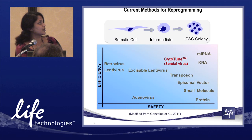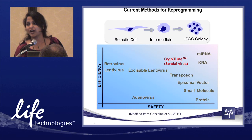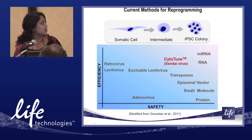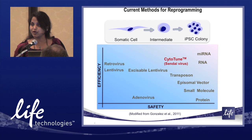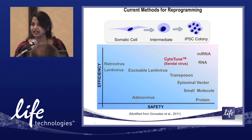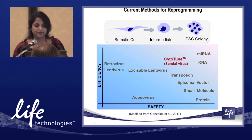Coming back to the different methods, this is a graph taken from a published paper. If you look at efficiency versus safety, methods such as small molecule, microRNA, RNA, and protein don't leave a footprint — they're extremely safe to use in a clinical setting. However, the efficiency of generating iPSCs with these methods is pretty low at this point in time.